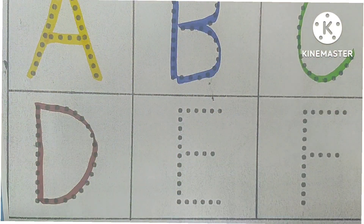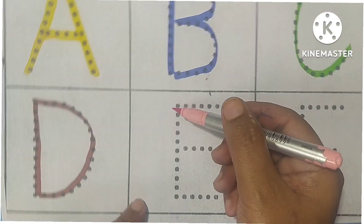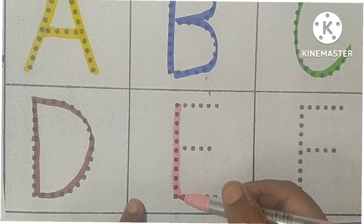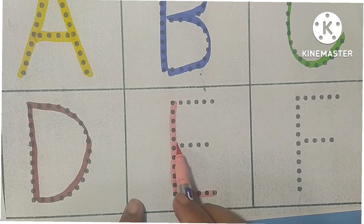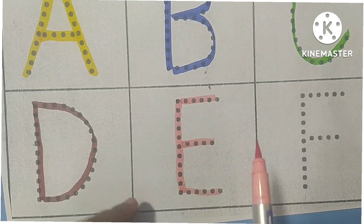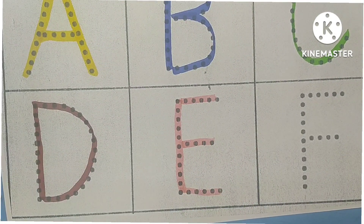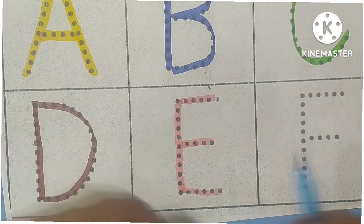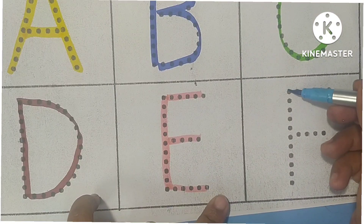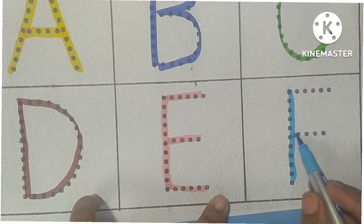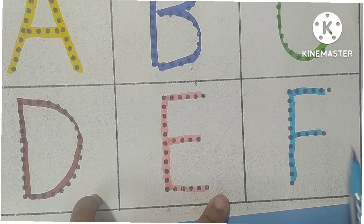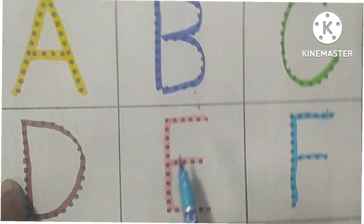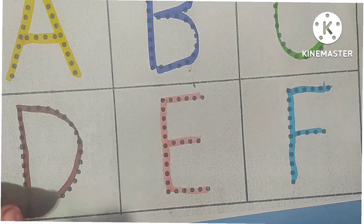Peach color. E, E for egg. E for egg. Blue color, sky blue. F, F for fish. A, B, C, D, E, F.